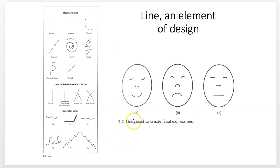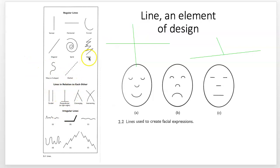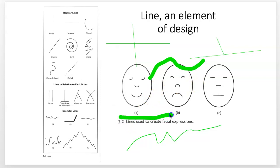We talked about line before. Lines are really in relationship to each other — both physically, like parallel, converging, or intersecting lines — and also in the quality of the line relative to each other. These are very angular lines, vertical and horizontal. But if you do wavy lines, that's different. Another part of it is the thickness and thinness of the line, which gives a very different feeling.